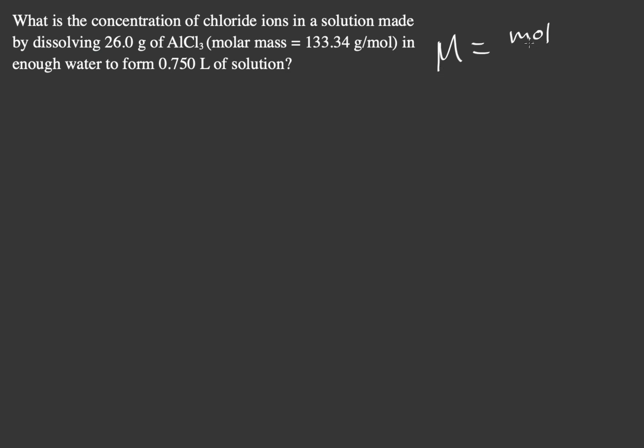Molarity is moles per liter. We have to find the moles and the volume, then do dimensional analysis. For every three chlorine ions we get, it's from one mole of aluminum chloride. You can tell that by the subscript. Let's solve this.